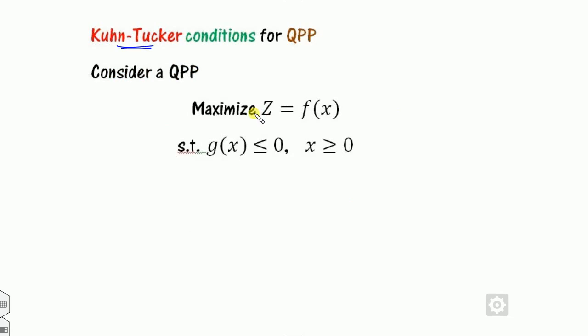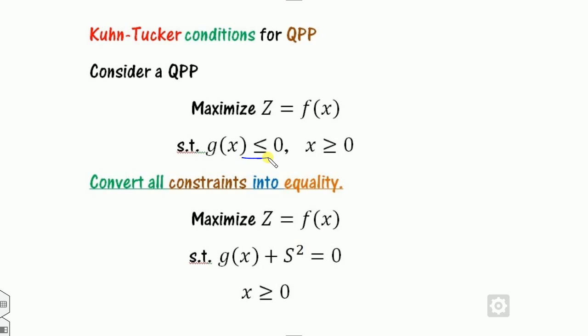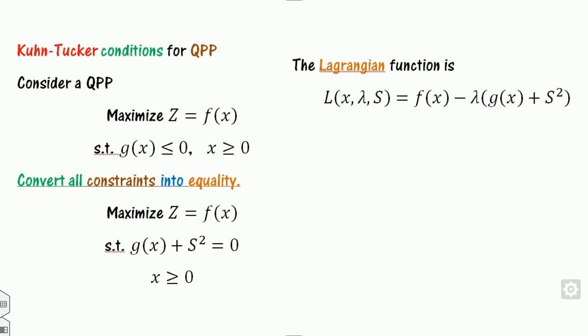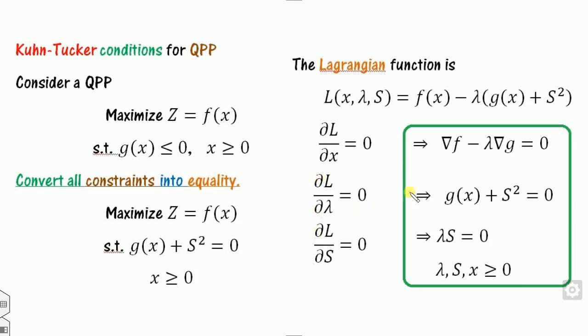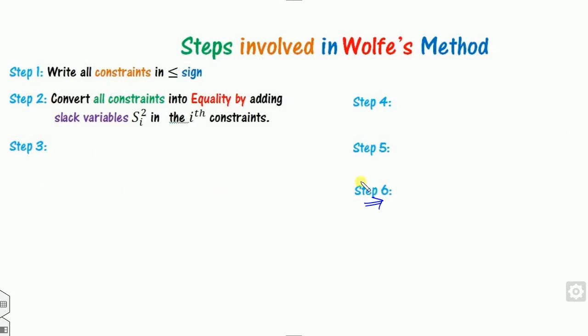The most important thing needed is the KKT conditions. The KKT conditions are written by converting inequalities to equalities using a slack variable s. Since this is a quadratic problem, the slack variable is represented as s-squared instead of s. Based on this, you write the Lagrange function and derive the necessary conditions. The key condition in the Wolf method is that the Lagrange multiplier times the slack variable equals zero.